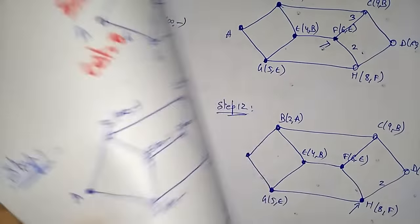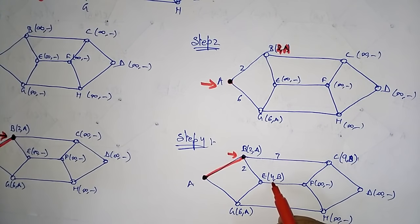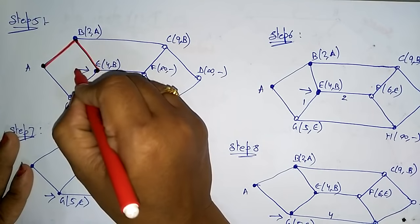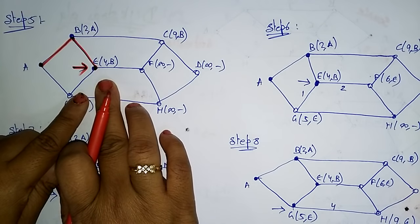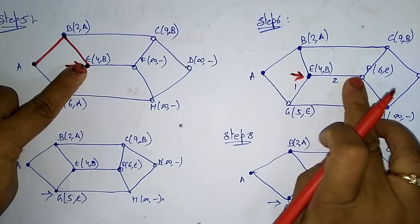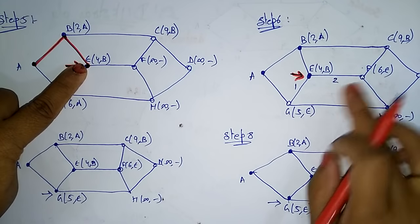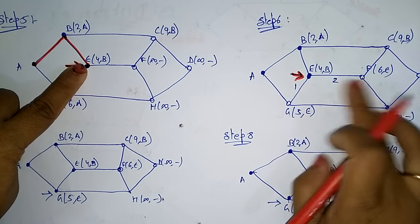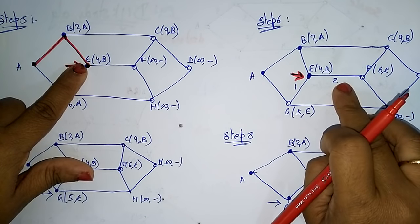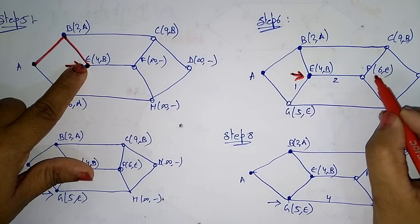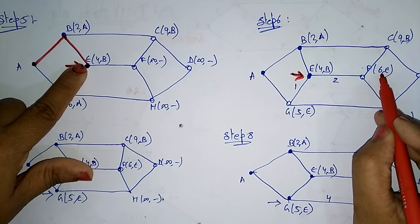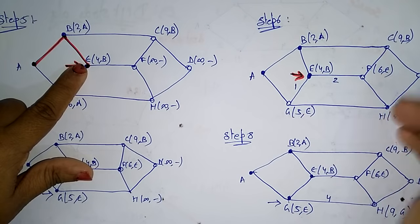In Step 5, between nodes C (cost 9) and E (cost 4), E has the smallest label, so mark E as permanent. E becomes the new working node. In Step 6, examine E's adjacent nodes — B is already visited, so we consider F and G. The cost of E is 4; distance E to F is 2, so 4+2=6 (labeled 6,E); distance E to G is 1, so 4+1=5 (labeled 5,E).